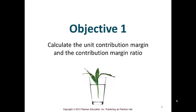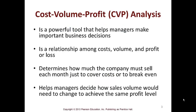The first objective is to calculate the unit contribution margin and the contribution margin ratio. CVP analysis is definitely a powerful tool to help managers. It is a relationship among cost, volume, and profit. It determines how much the company must sell each month just to cover cost or break even, which is really important in overall decision-making, and it helps managers decide how sales volume would need to change to achieve a profit.